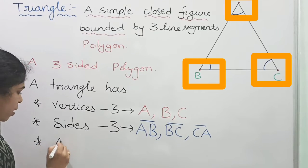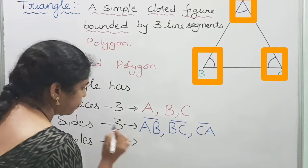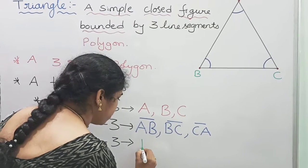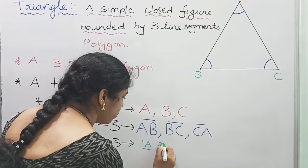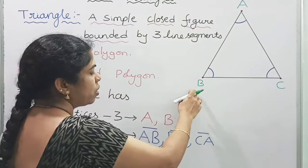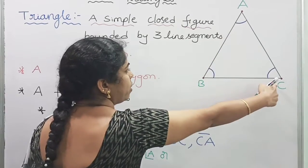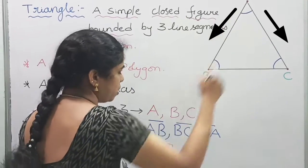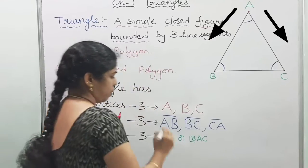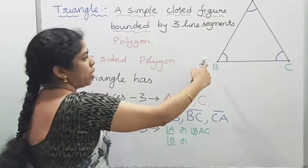A triangle also has three angles: angle A, angle B, and angle C. You can also write each angle using three vertices. For example, angle A can be written as angle CAB or angle BAC. Angle B can be written as angle ABC or angle CBA.